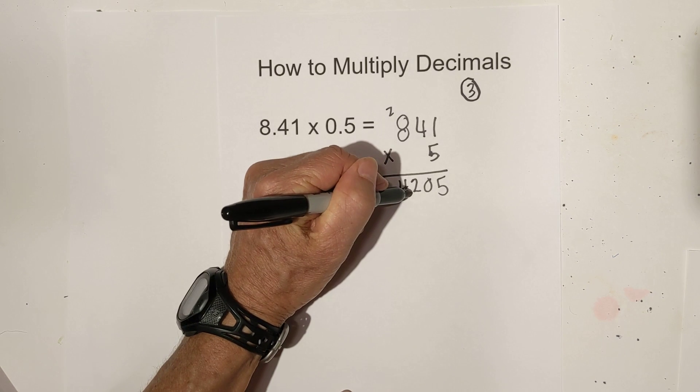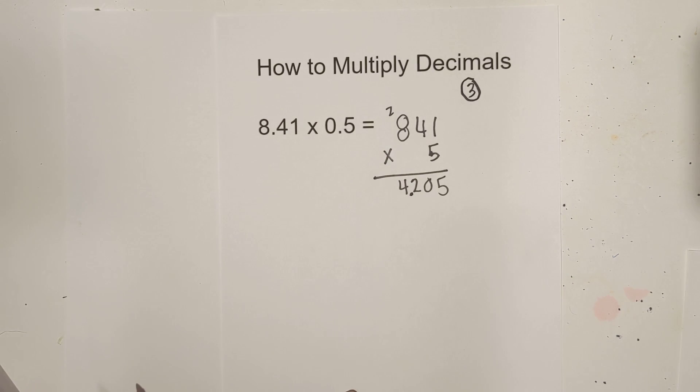2, 3 so the decimal goes right there. So it is 4 and 205. Okay, so let's work another example.